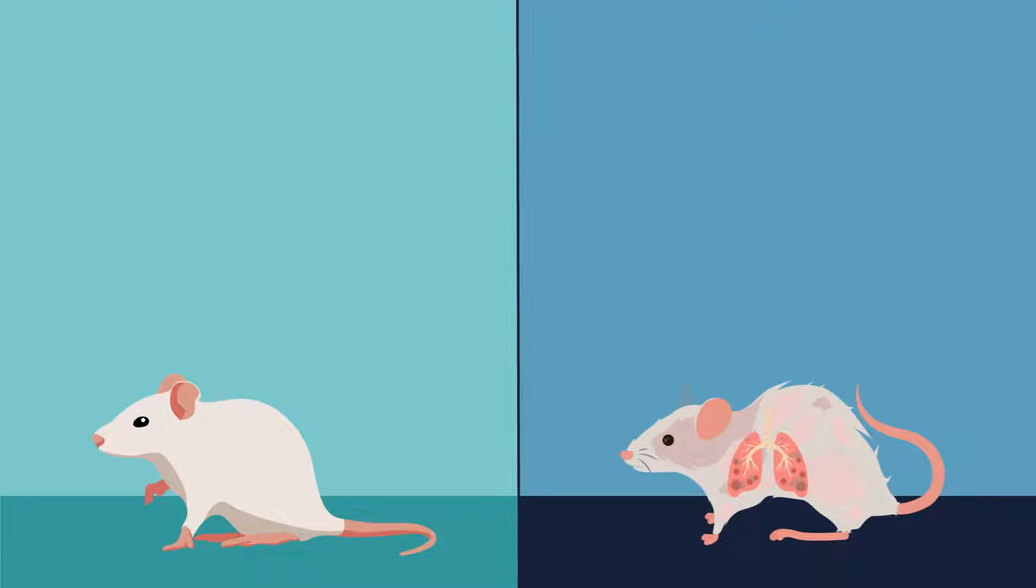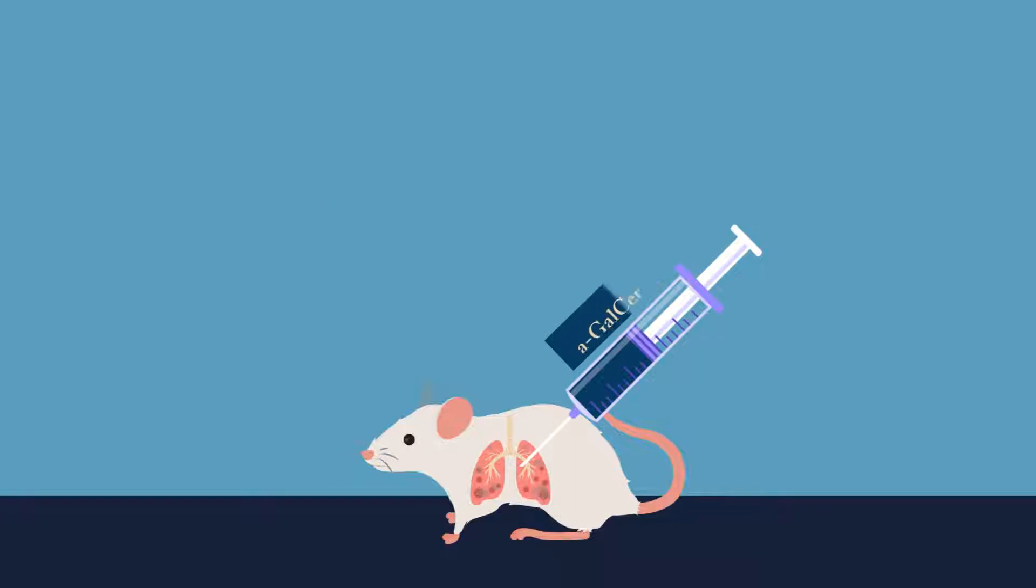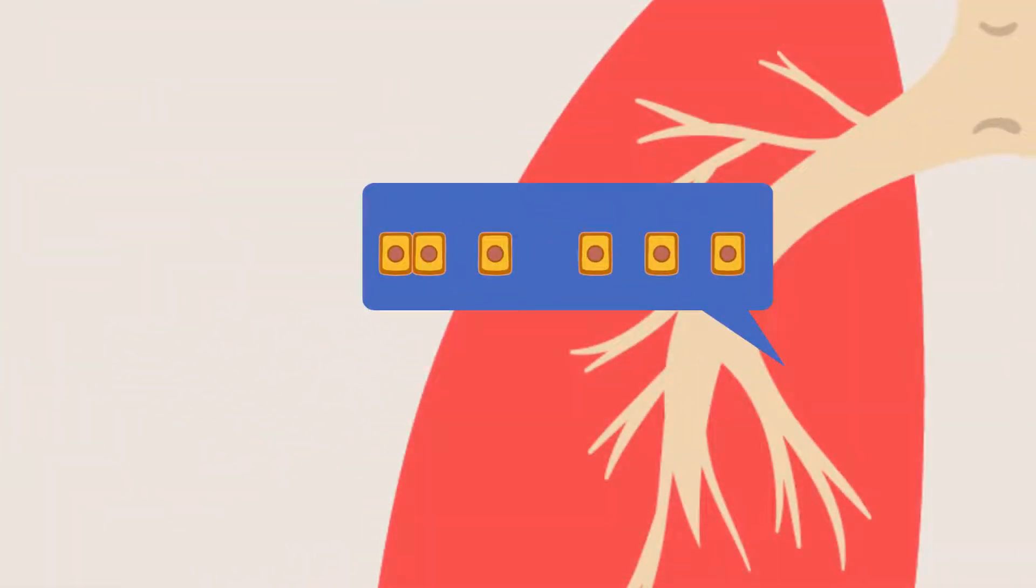The second set of experiments used a model for IPF in which bleomycin injury resulted in accumulation of senescent cells, increased fibrosis, and eventual death. Alpha-gal-cer treatment following the injury not only cleared senescent cells but reduced fibrosis and prevented death.